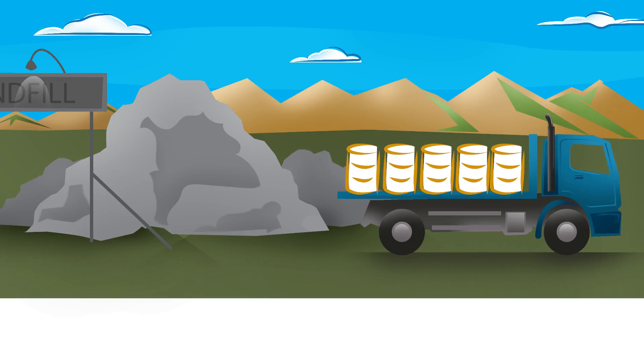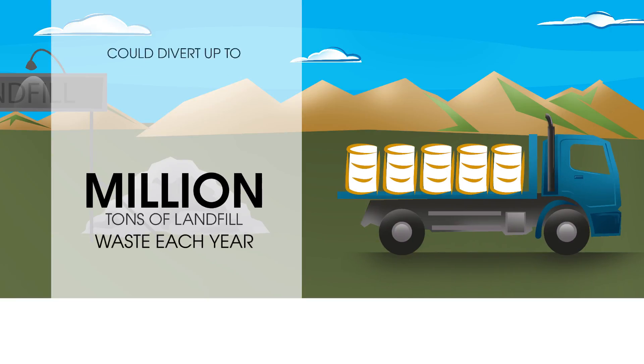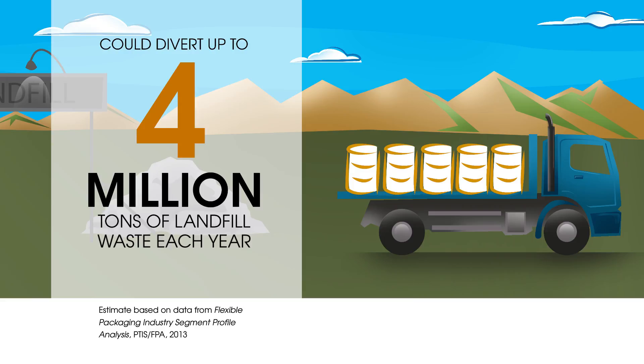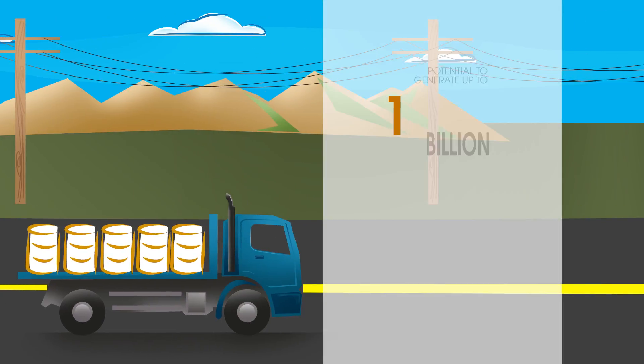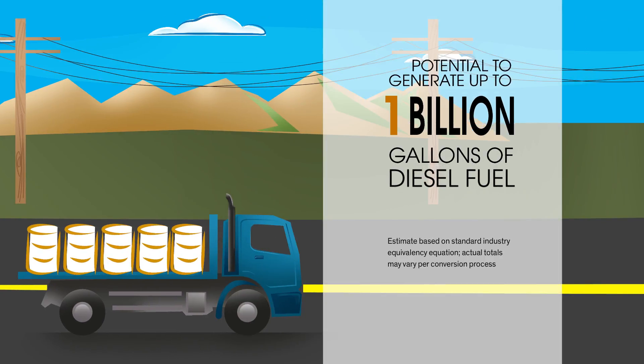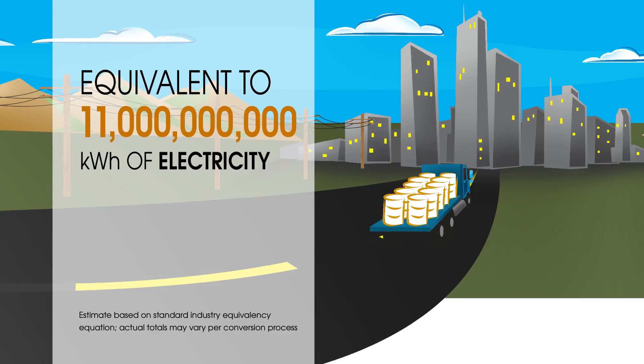Hefty Energy Bags have the potential to divert 4 million tons of non-recycled plastics from landfills in the U.S. annually. And those diverted plastics can be converted into different usable energy resources, equivalent to 1 billion gallons of diesel fuel or more than 11 billion kilowatt hours of electricity to power homes.